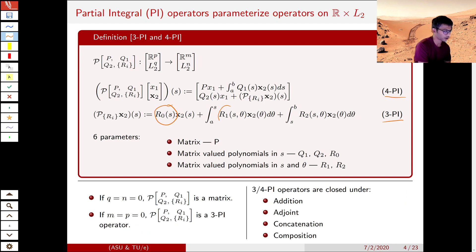One is the R0, which is a polynomial in s, R1, which is a polynomial in s and theta, R2, which is also a polynomial in s and theta. And 3-PI operators map from L2 to L2.